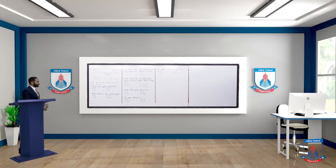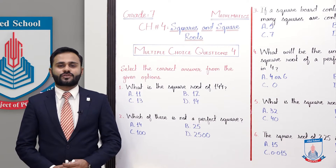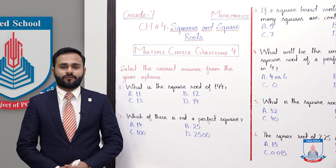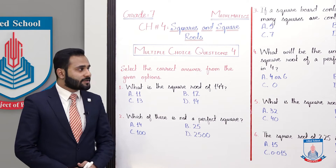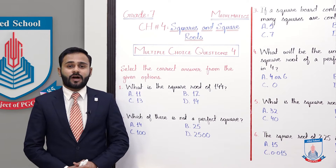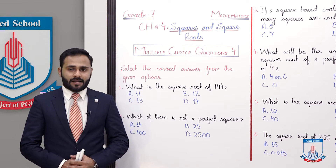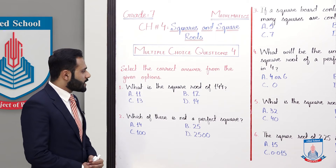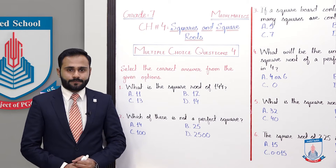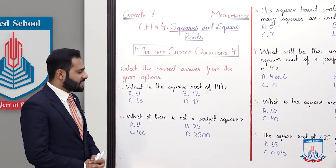Chapter number 4 is Squares and Square Roots, and we have multiple choice questions. Select the correct answer from the given options — you have four options for each question and you have to choose the correct one. The first MCQ is: what is the square root of 144? The options are a) 11, b) 12, c) 13, and d) 14.